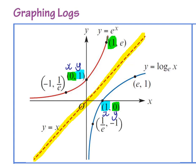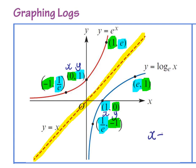Here x is 1 and for that reflected coordinate y is 1. Here y is e, so the reflected coordinate x is e. Finally x is negative 1, y is 1 over e, x is 1 over e. So because they're inverse functions, your x and y values are swapping.